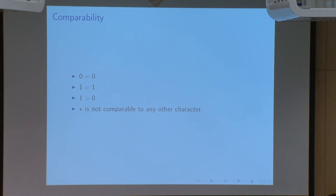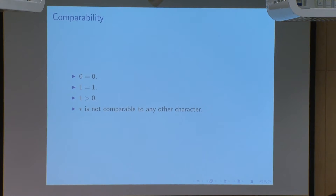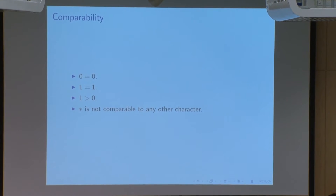Before discussing tournament codes as a specific subset of codes, we have to discuss the notion of comparability with respect to both characters and strings. In our three-letter alphabet — zero, one, and star — comparability works just as you'd expect for zeros and ones. Zero is considered equal to itself, one is equal to itself, and one is considered greater than zero. However, the third letter, star, is not considered comparable to either zero or one, and this is what gives tournament codes some of their special properties.